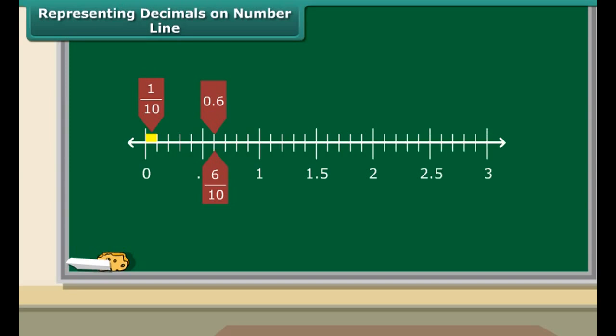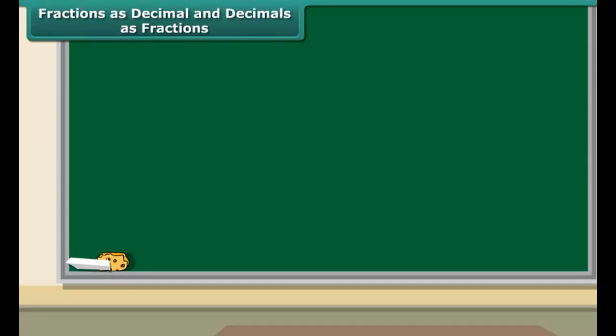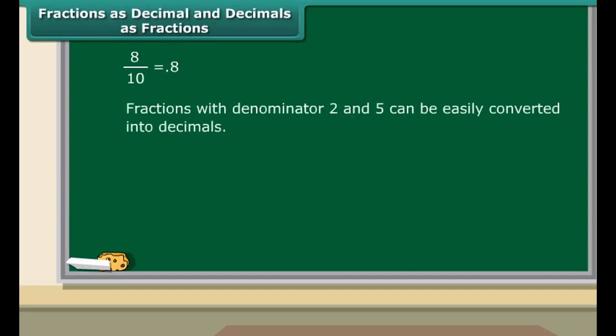Similarly, we can represent 2.7 by counting two ones and seven tenths. We know that a fraction with denominator 10 can be represented using decimals.